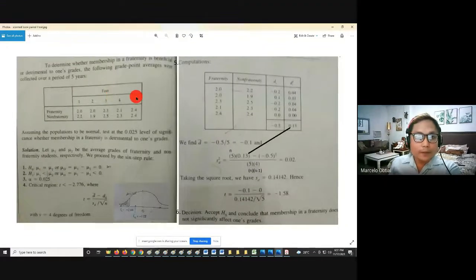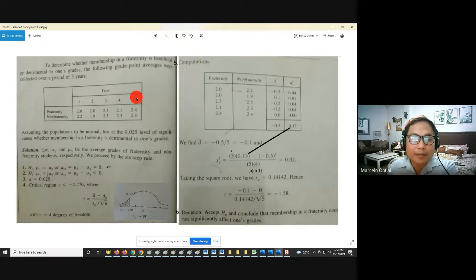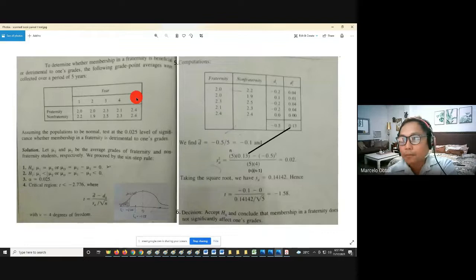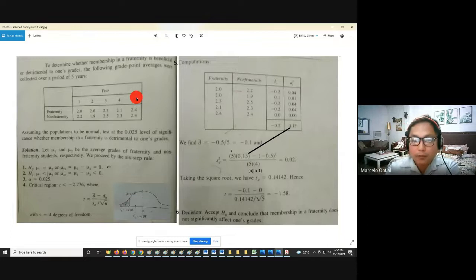So this is one example. To determine whether membership in a fraternity is beneficial or detrimental, a hindrance or barrier to one's grades, the following grade point averages were collected over a period of five years. Can you imagine if you have your thesis? For example, your thesis is all about you want to compare. What's the effect of the online class? Compare with the face-to-face. That's two groups, paired observation.